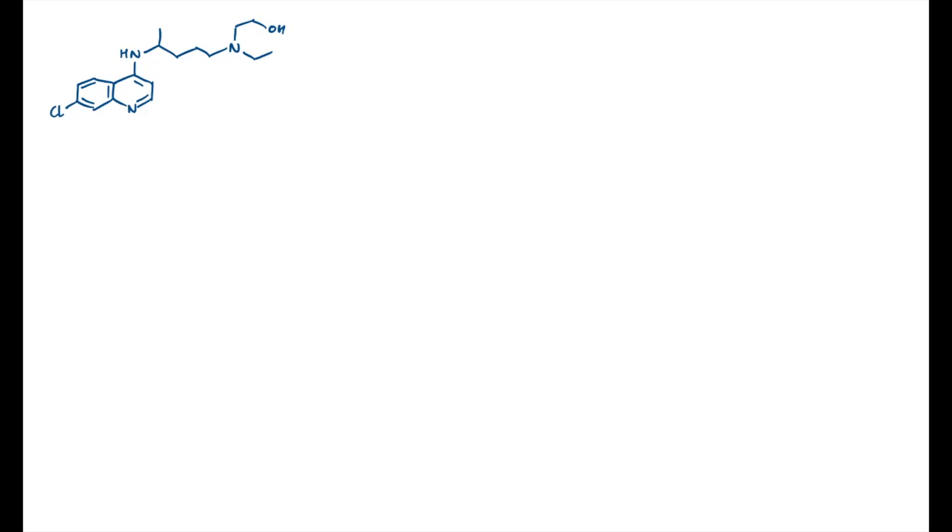So as always, first I'll just identify the functional groups. This is an aryl chloride. We've got a bicyclic aromatic system here. This is known as a quinoline. I'm not going to go into the chemistry of that type of system. Suffice it to say that this ring on the right hand side is more electron deficient and more pyridine-like than the ring on the left hand side. I have two amines. So I have an amine here, a secondary one, and a tertiary one on the right hand side, and I have an alcohol at the end.